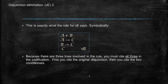So that's what the rule says: if you have A or B, and you have if A then C, and you also have if B then C, then you can conclude C by OR elimination. Notice that there are three lines — the original disjunction and the two conditionals — so that means you're going to cite three lines in your justification: the disjunction first, and then the two conditionals afterwards.